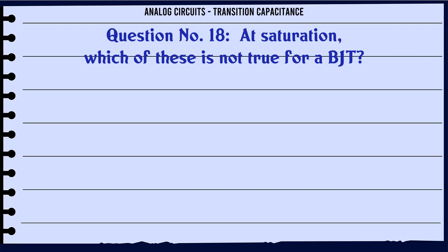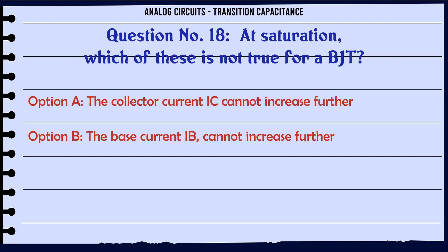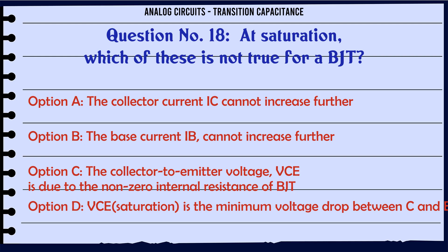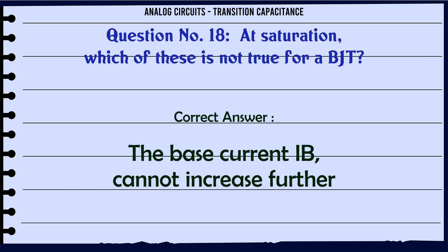At saturation, which of these is not true for a BJT? A: Collector current Ic cannot increase further, B: The base current IB cannot increase further, C: The collector-to-emitter voltage VCE is due to the non-zero internal resistance of BJT, D: VCESAT is the minimum voltage drop between C and E. The correct answer is: The base current IB cannot increase further.